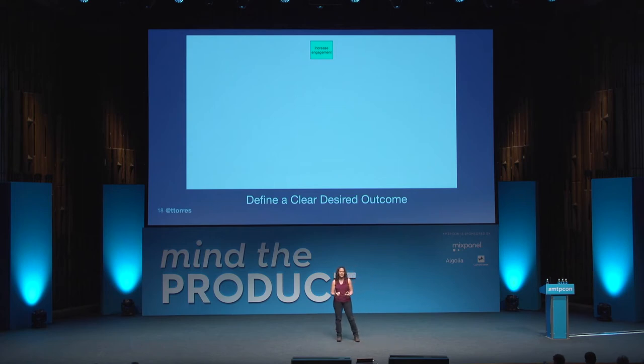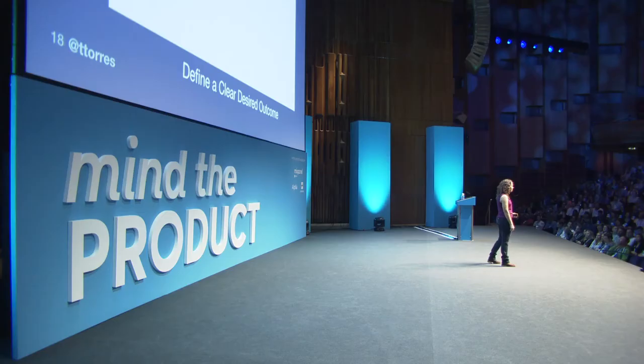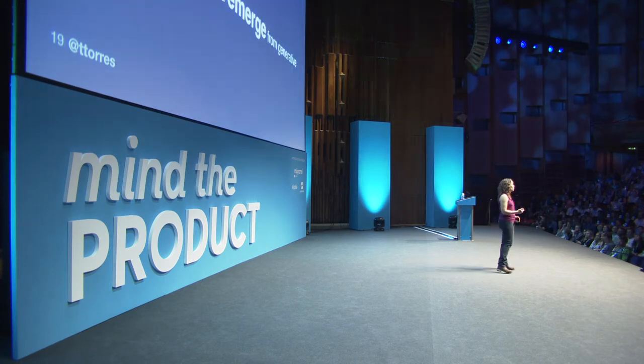It starts with defining a clear desired outcome. My team had a clear desired outcome — we were all aligned that we needed to fix our engagement problem. But we saw that this wasn't enough. We didn't agree on how to get there, and we started by jumping right into solutions. The problem with jumping to solutions is we don't know what customer problem we're solving that would actually increase engagement.